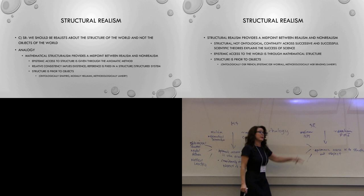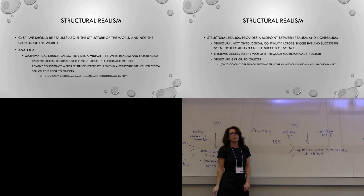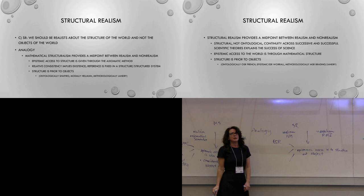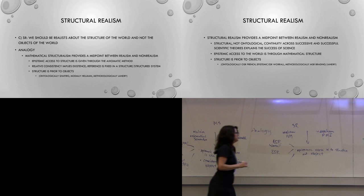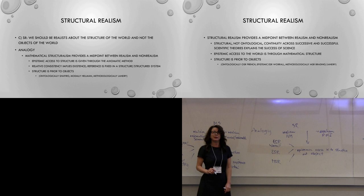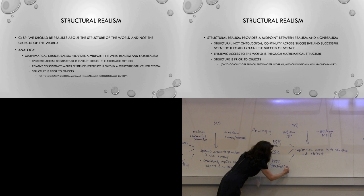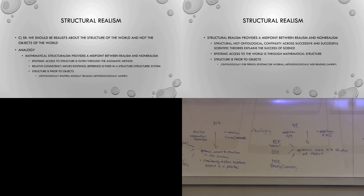Over in structural realism, we get the same options. We could just read this as an epistemological position — that's ESR, Worrall's position. We could go even further — that's French — and he wants to say that tells us that there are no objects, that all there is to this position is its structure. And then finally, you could get the methodological position again — that's Katherine Brading and myself. We see how structure gets used to give an account of exactness or applicability in science.